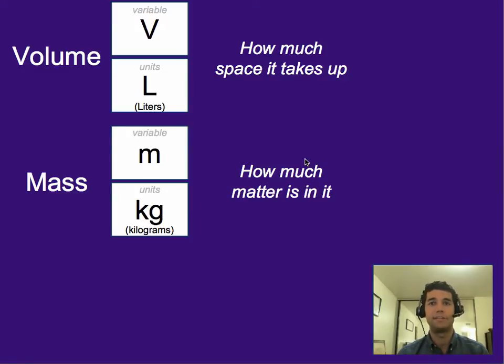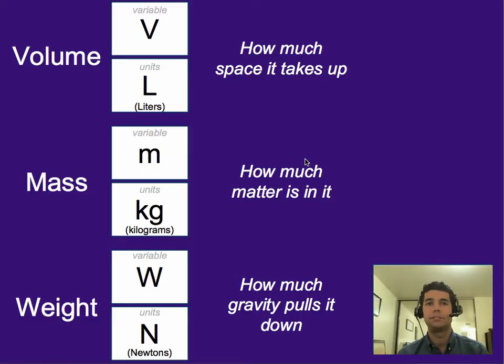Mass is how much matter or stuff is in something. Its variable is m, and it's measured in kilograms, or grams, or milligrams. And weight, its variable is w, and it's measured in newtons. In the scientific community, that's what it's measured in. However, if we went to imperial units, we usually every day measure this in pounds. So the equivalent to a pound is a newton in the metric system. And it really is how much gravity is pulling down on something. So it's a push or a pull, so therefore it's a force.